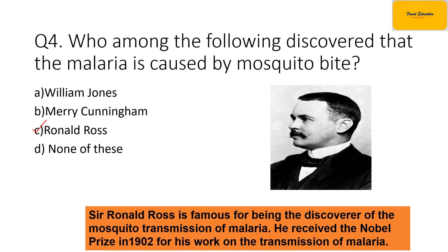Ronald Ross discovered how malaria is transmitted from one person to another. For this work, he was awarded the Nobel Prize in 1902. Earlier, many people were affected by malaria and many deaths occurred. Normally this disease was seen in areas with heavy rainfall or water-stagnant areas. People thought it was caused by poisonous gases coming from dirty, swampy areas. But later Ronald Ross discovered that malaria is transmitted because of the mosquito bite.